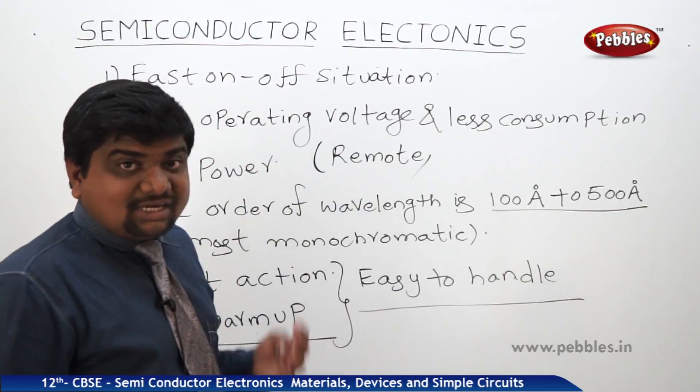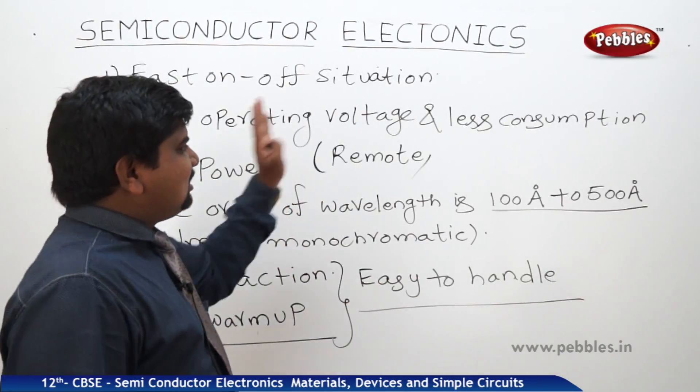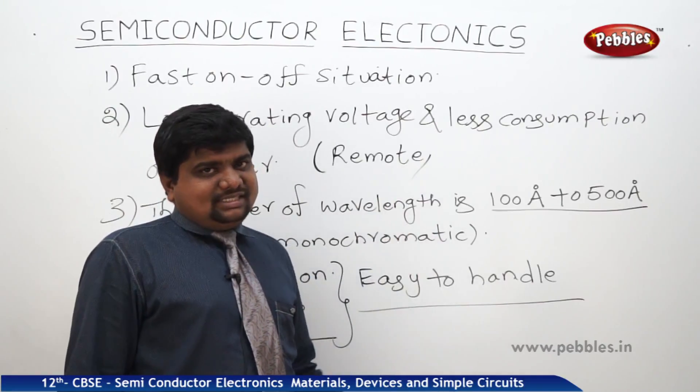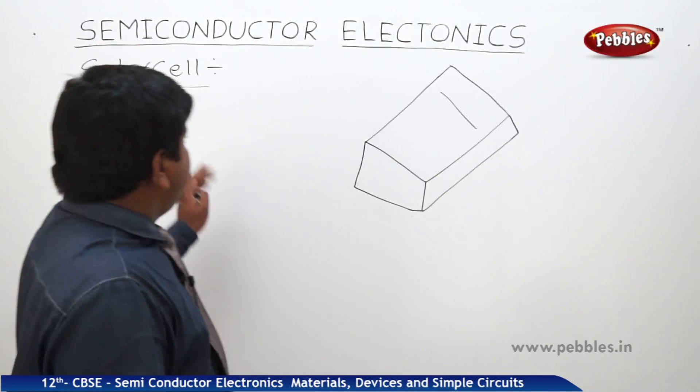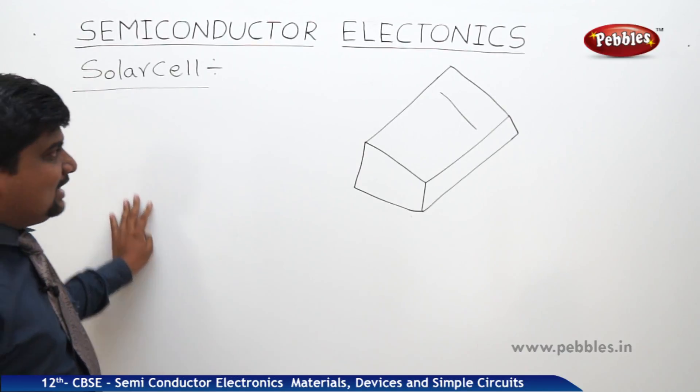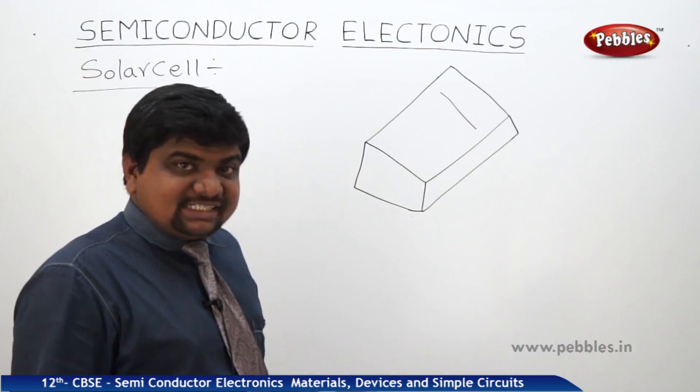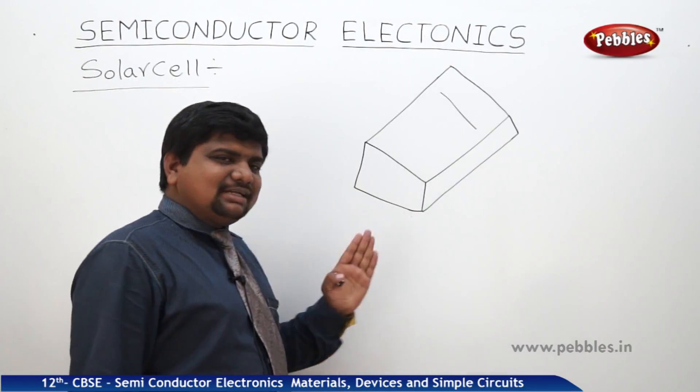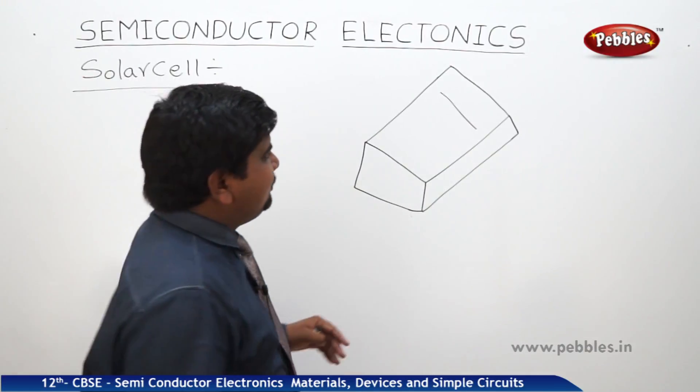So those LEDs are useful as bulbs in TV remotes, optoelectronic devices, remote sensors. So many uses are there for these LEDs. One more example of the PN junction diode is solar cell. The construction of the solar cell is not that much easy. But if you want to show the schematic diagram of that one, it will be like this.